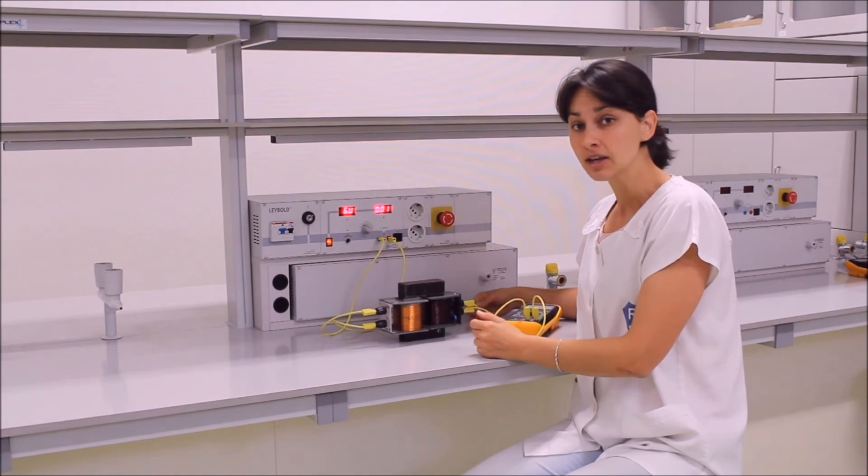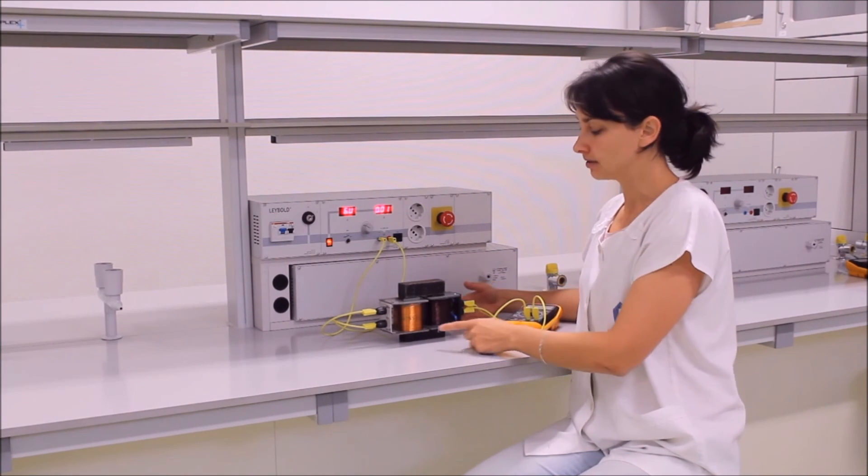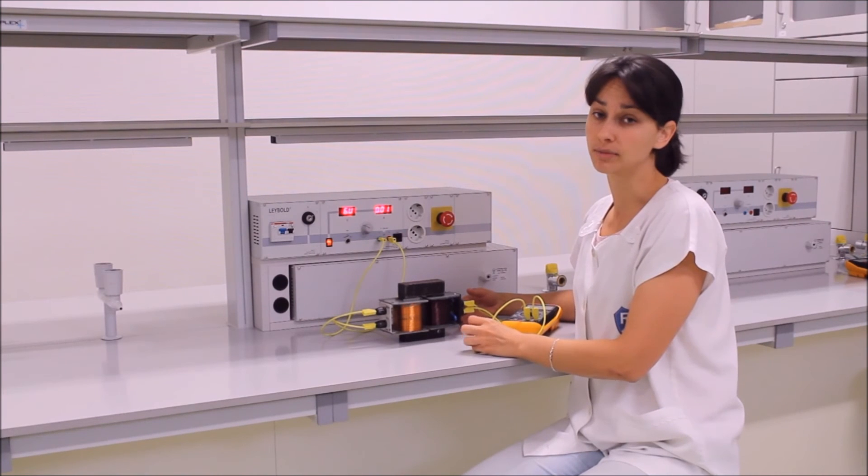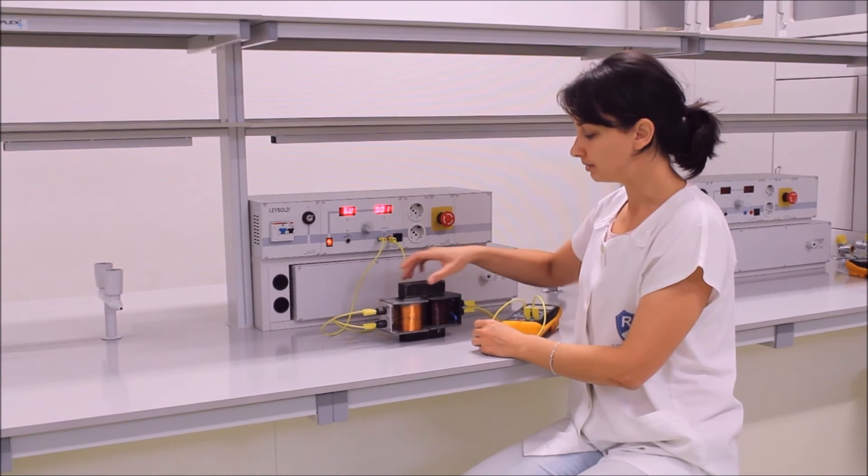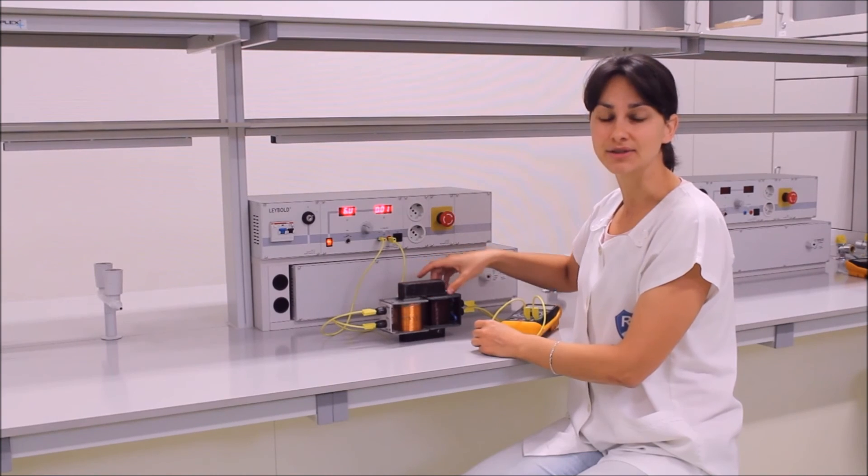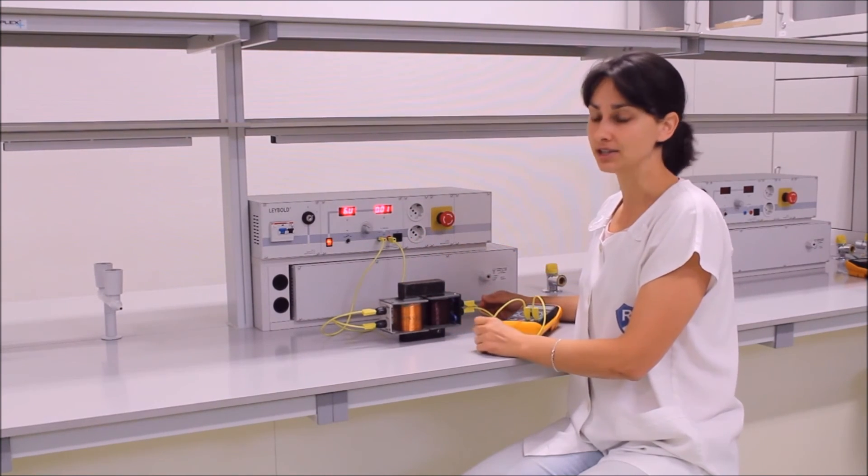Veszteségek megjelennek. A veszteségek egyrészt a vezetékek ellenállásával magyarázhatók, illetve azzal, hogy nem tökéletesen záródik ez a vasmag, tehát szóródhat a mágneses mező.